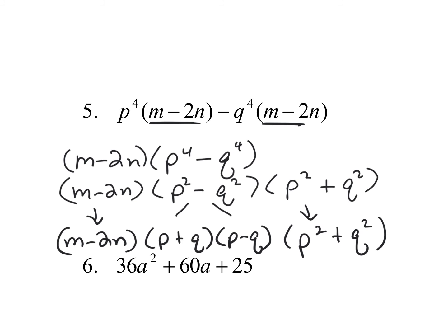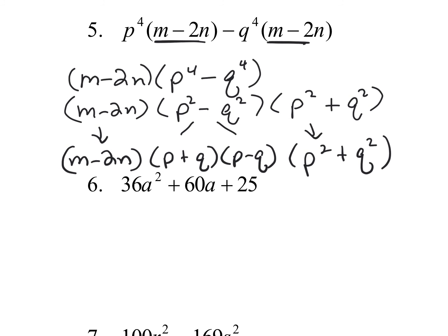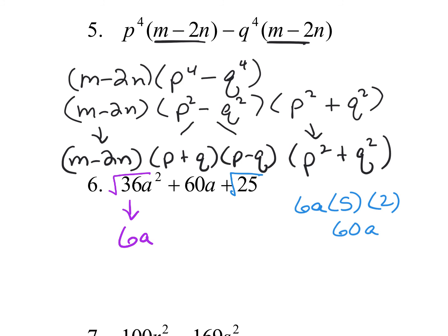The next one is a perfect square trinomial. Square root 36A squared to get 6A, and square root 25 to get 5. Double it — if that gives you the middle term, you know it's a perfect square trinomial. All you need to do is take the square root 6A, take the square root 5, put the sign of the middle, and it's squared — because a binomial squared always produces a perfect square trinomial.